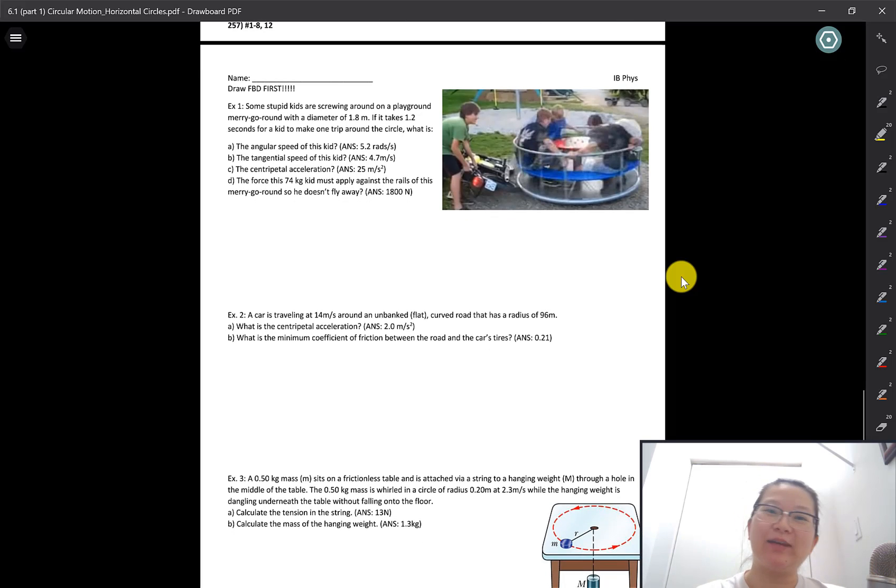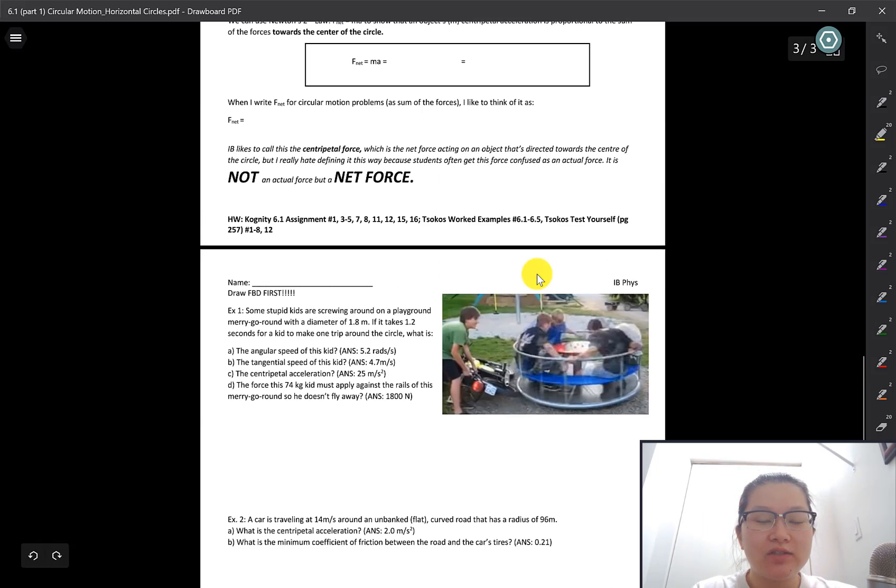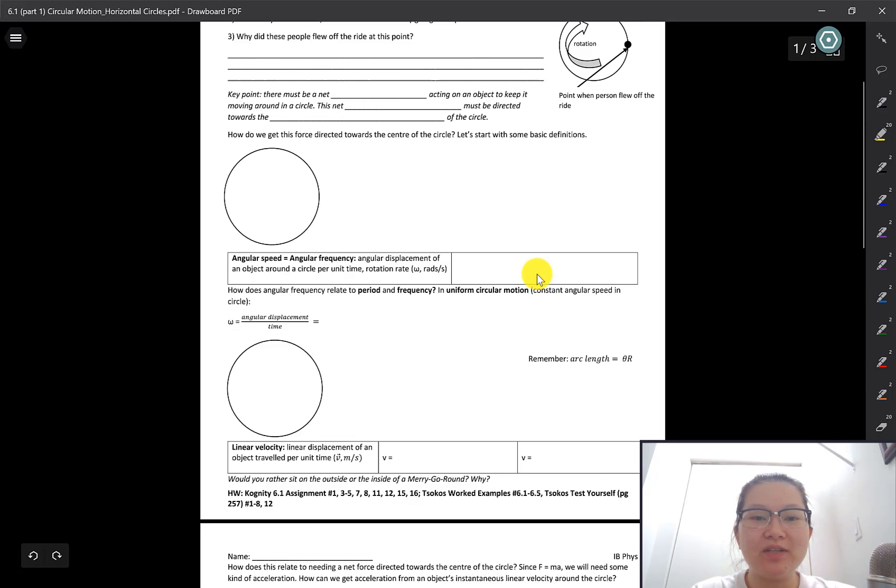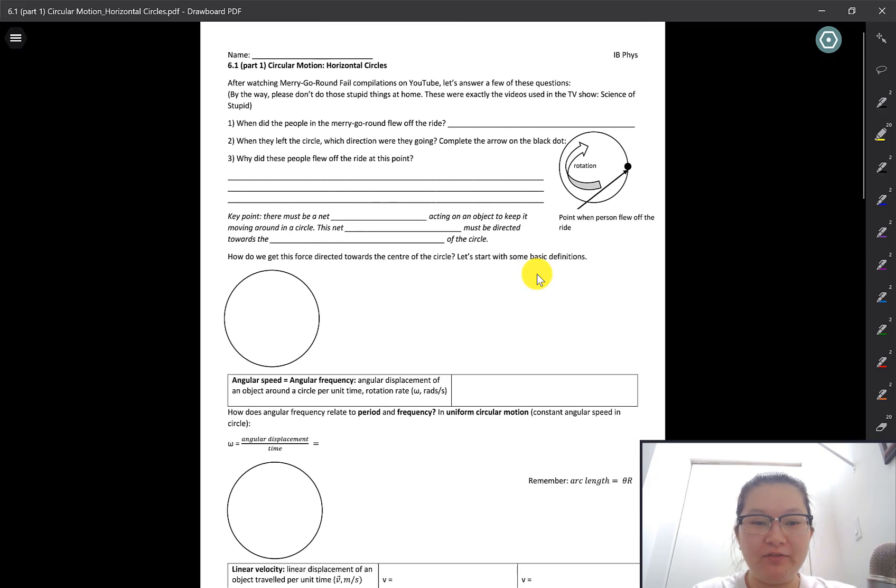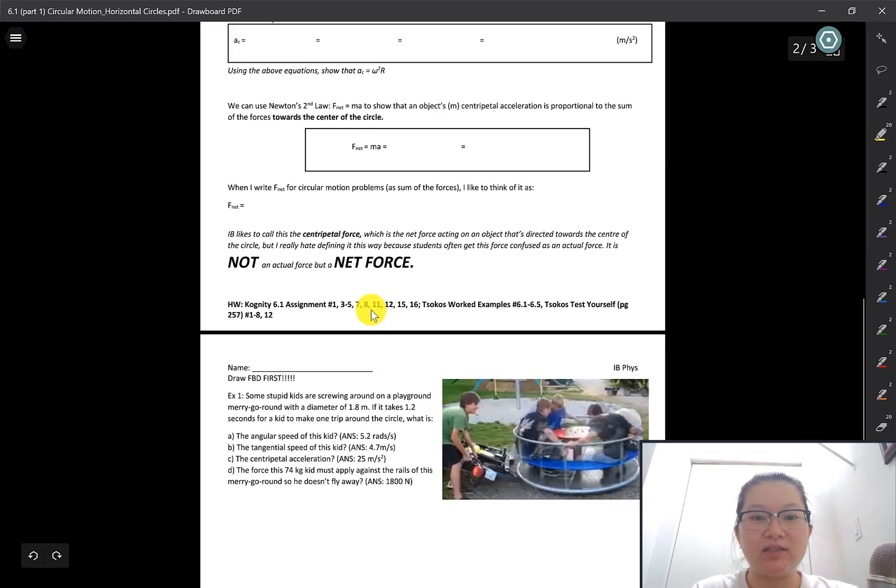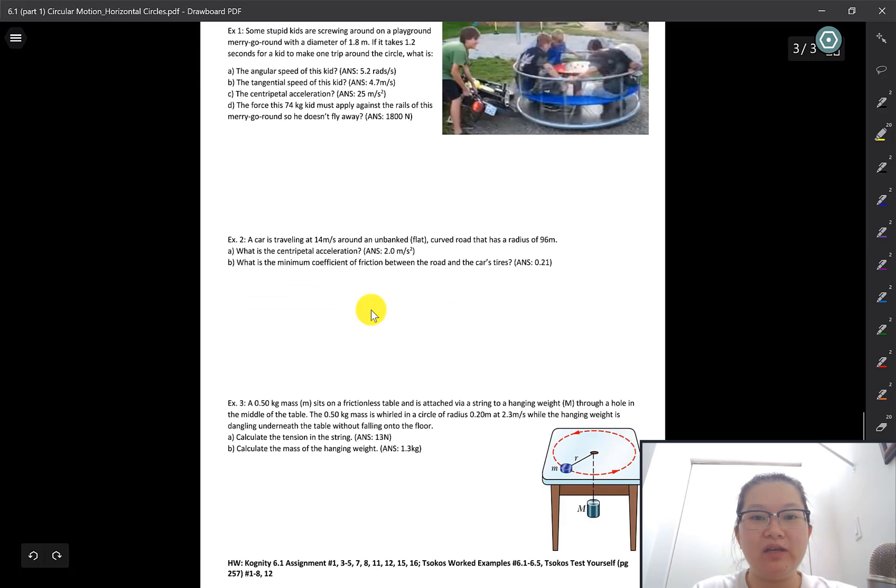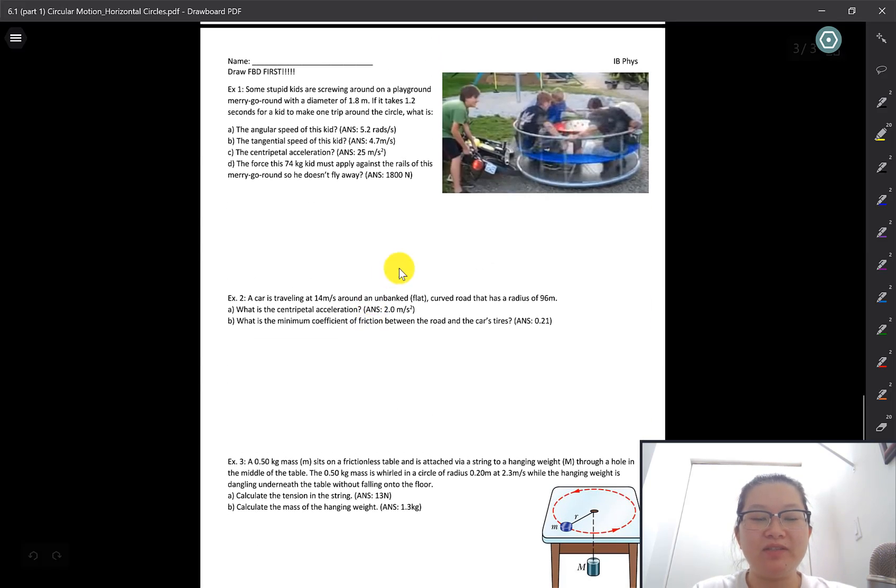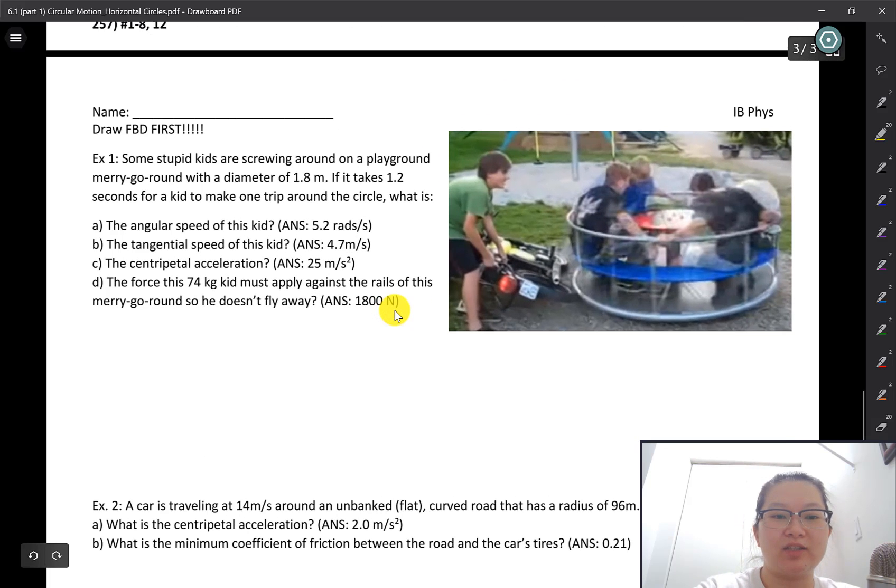Hey, welcome back to Fat Mama Physics. In this video we are going to do circular motion examples. This one is not filled out, but there will be a file for you to find where this is filled out, or hopefully you have this filled out already. This video we are going to look at horizontal circle examples for circular motion. This is topic six in the IB syllabus as well as your Tsokos textbook.